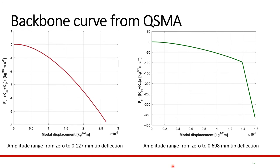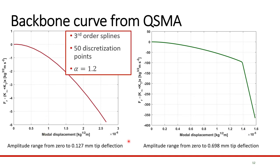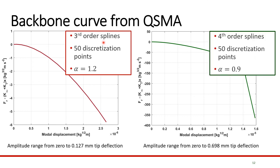The backbone curve from QSMA was obtained in two paths: one from 0 to 0.127 mm to capture the low amplitude non-linearity, and another from 0 to 0.698 mm to make sure we get the macro slip point. This was done in two paths to ensure sufficient points to completely characterize the non-linearity from zero up until macro slip. For the low amplitude curve, we use third order splines, 50 discretization points, and alpha equals 1.2. For the higher amplitude curves, we use fourth order splines, 50 discretization points, but this time an alpha value equals 0.9.